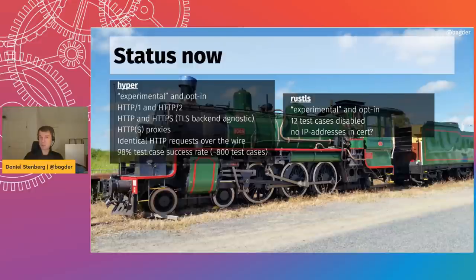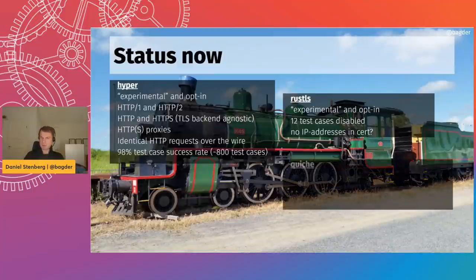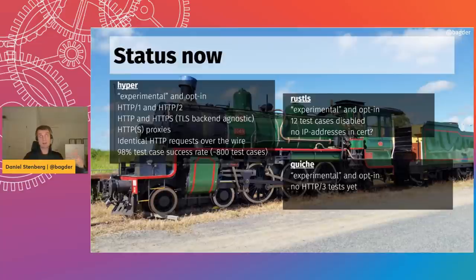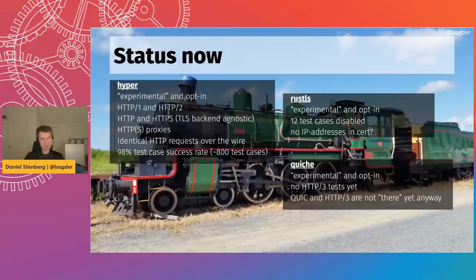Rustls can't yet verify IP addresses in server certificates — so for example HTTPS to an IP like 1.1.1.1 can't be verified. For quiche, it's also experimental and opt-in, and there are no HTTP/3 tests in curl yet partly because of the TLS complexity with QUIC. HTTP/3 and QUIC are still early in the ecosystem generally, so we have more time before we need to be fully there.